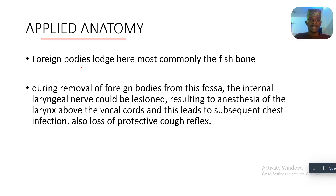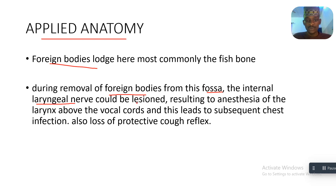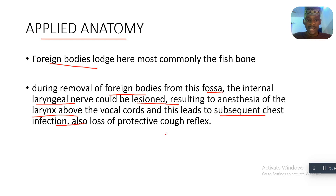In applied anatomy, foreign bodies lodge in the piriform fossa since it is a depression. For example, fish bones can get stuck there — not in the neck as commonly thought, but in the piriform fossa. During removal of foreign bodies from the fossa, the internal laryngeal nerve could be lesioned, resulting in anesthesia of the larynx above the vocal cords, leading to subsequent chest infection and loss of the protective cough reflex.